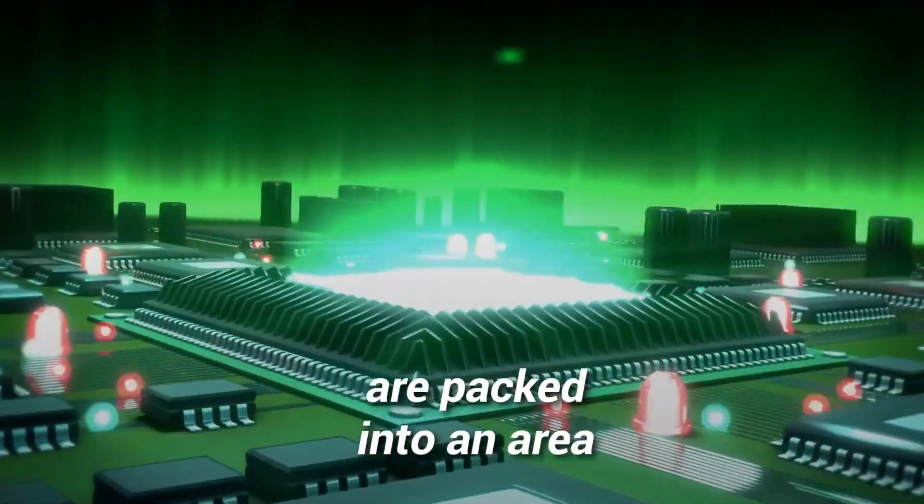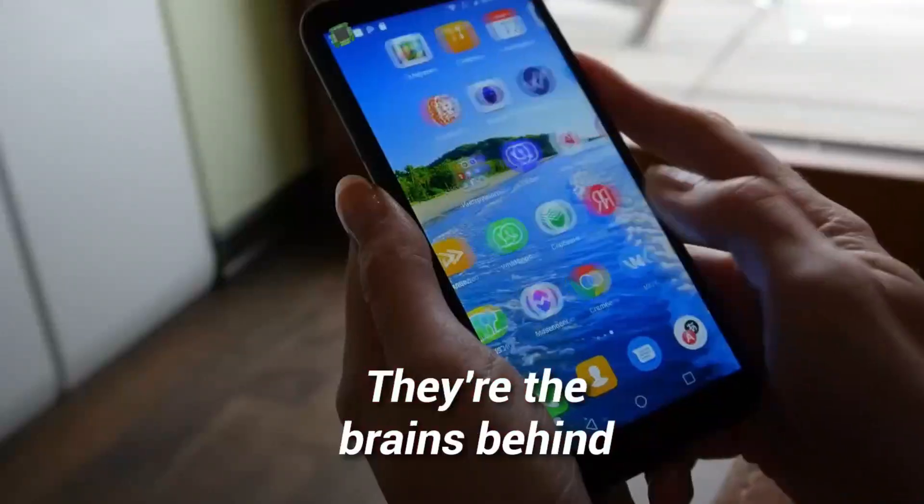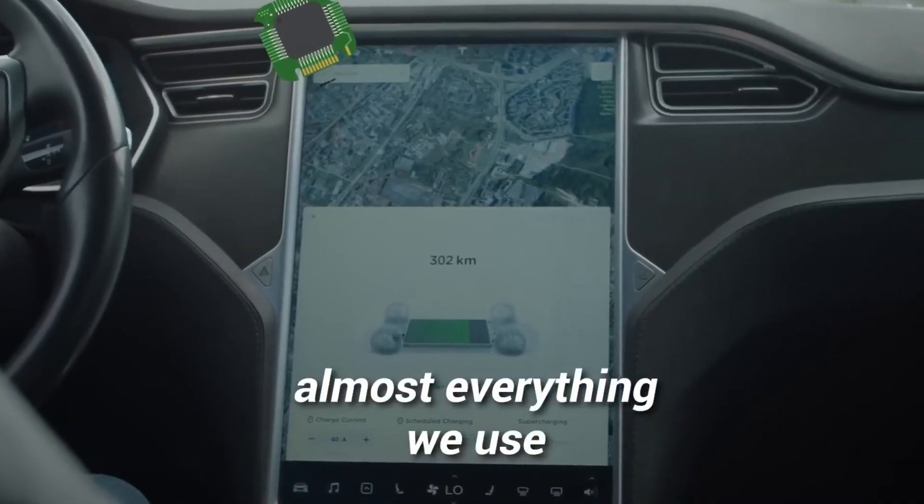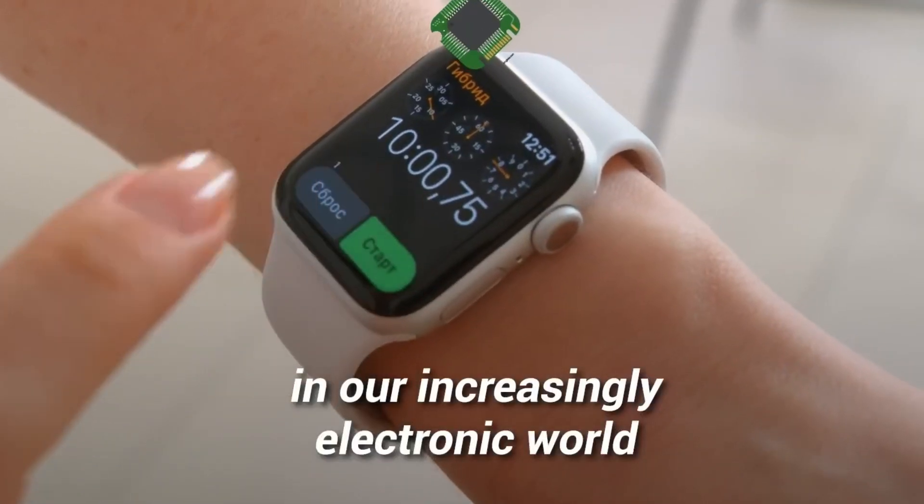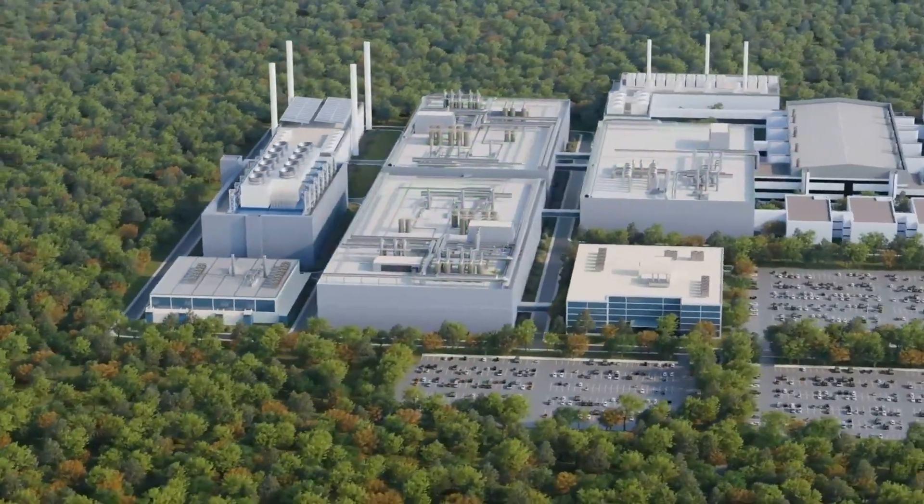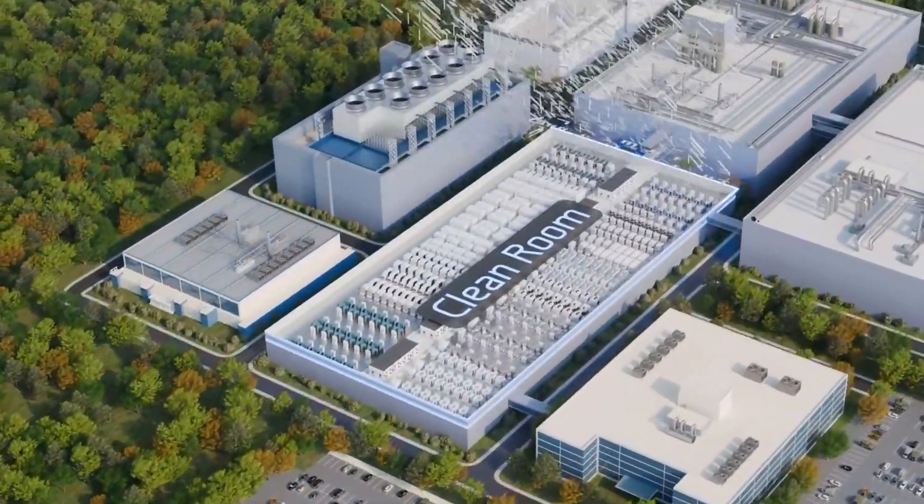Each one of them is a miracle of miniature manufacturing. A processor works thanks to the circuits of millions of individual components called transistors. The more transistors we put on a chip, the faster and more powerful it will be.